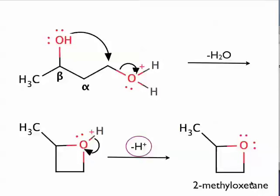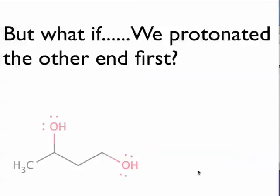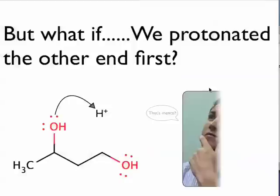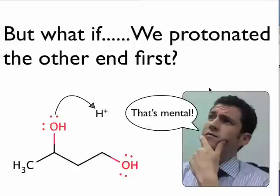Oxetane, because it's a 4-member ether cycle with an oxygen. And at the 2-position, we have a methyl group. So the question now becomes, what if we protonated the other end to start this going? So rather than choosing the oxygen on this side of the molecule, what if we had to start off by protonating the other oxygen?